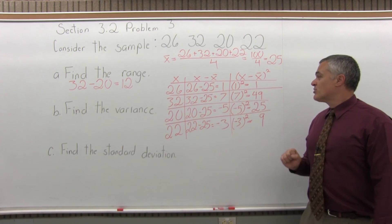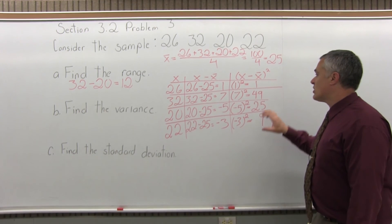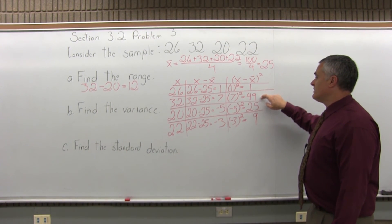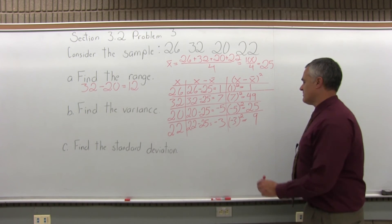Step 3, get a total of the last column. So, total up, 1 and 49 is 50, 50 and 25 is 75, 75 plus 9 is 84.